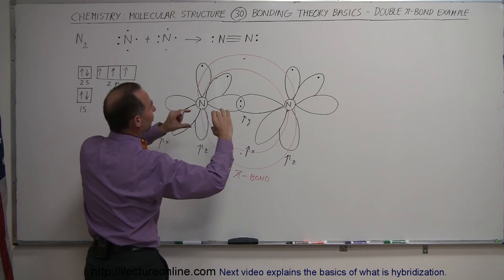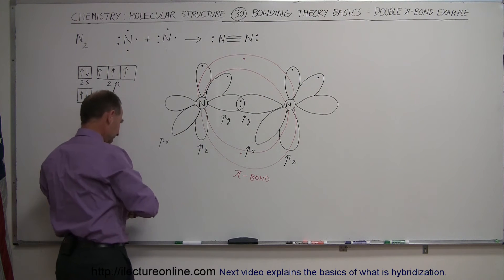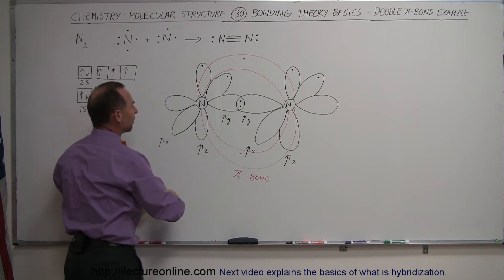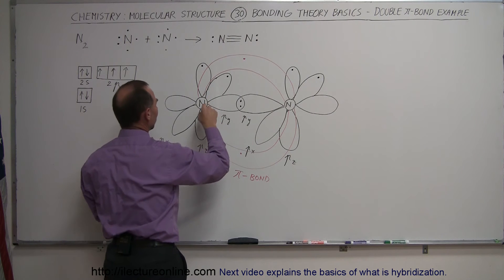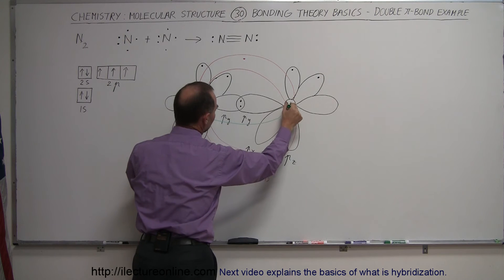and they're going to form bonds by bending in this direction - one in front of the board, one behind the board. So how do I draw that? Well, not easily, but let me try. I'm going to represent the x orbital bending over and forming a bond like this.